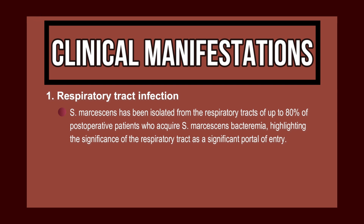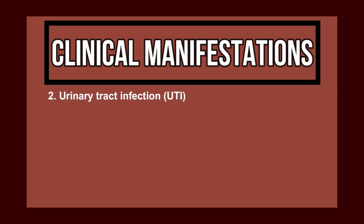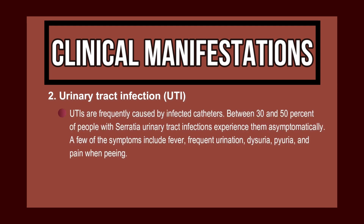Number one: respiratory tract infection. Serratia marcescens has been isolated from the respiratory tract of up to 80% of post-operative patients who acquire Serratia marcescens bacteremia, highlighting the respiratory tract as a significant portal of entry. Number two: UTIs. UTIs are frequently caused by infected catheters; between 30–50% of people with Serratia urinary tract infections experience them asymptomatically.